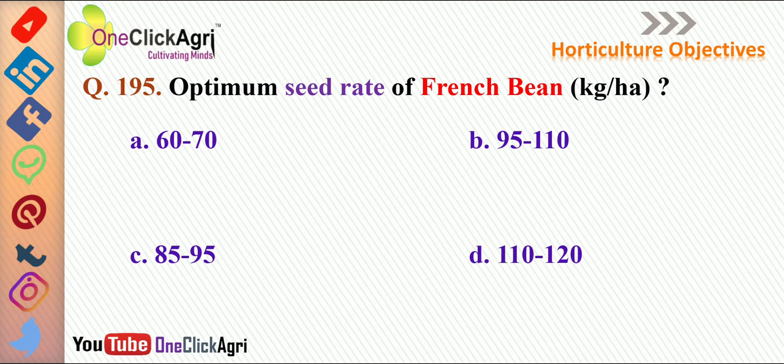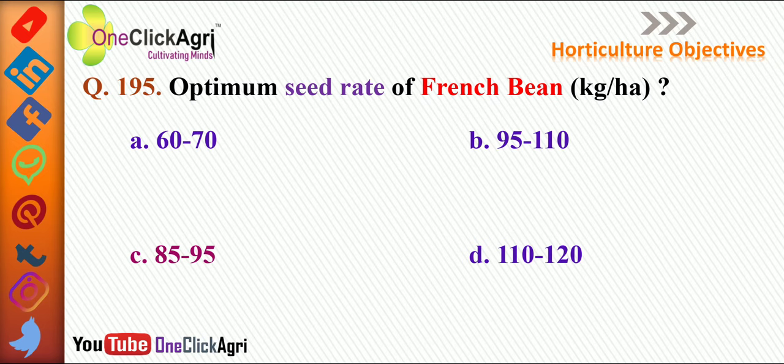The optimum seed rate of French bean per hectare: the right answer is 85 to 95 kg.